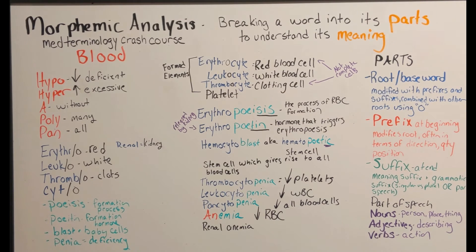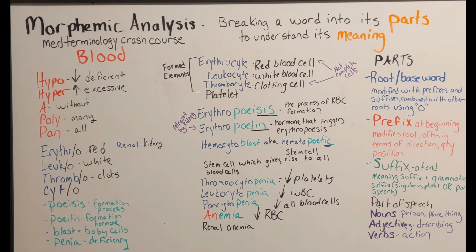Renal anemia would be caused by the kidneys failing. Why would failing kidneys affect your red blood cells? Because the hormone erythropoietin, which triggers erythropoiesis — the formation of red blood cells — is released by the kidneys. So if your kidneys aren't working, you're not releasing enough erythropoietin, and your body doesn't know to make red blood cells, resulting in not enough red blood cells.